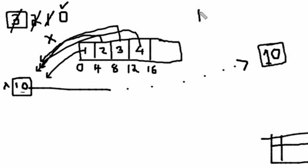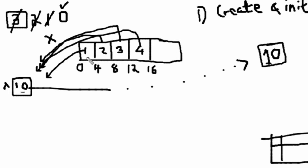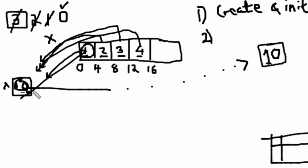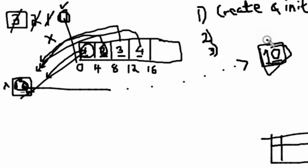Let's quickly recap the steps. First, create an array and initialize it — load the data values into the array. Second, pick up a number and add it with the previous answer. If it's the first number, just load it; if it's the second number, add it with the previous one, store the result, and decrement the counter. Third, check if the counter has reached 0. If it has, transfer the result to the memory location.